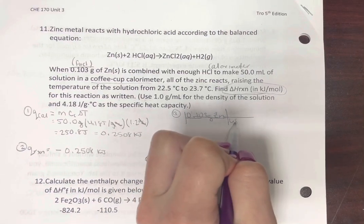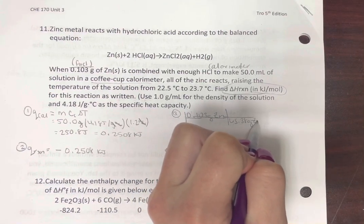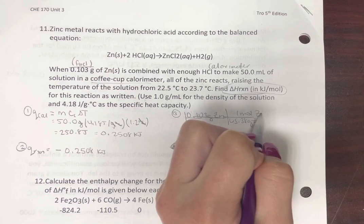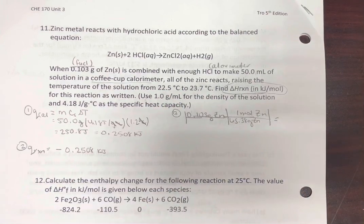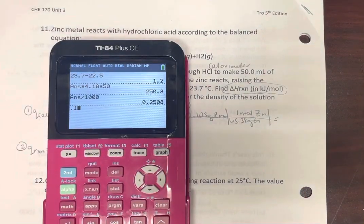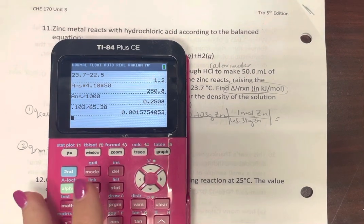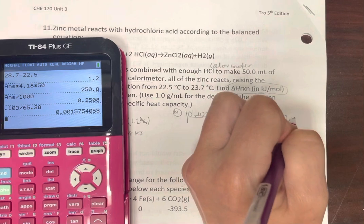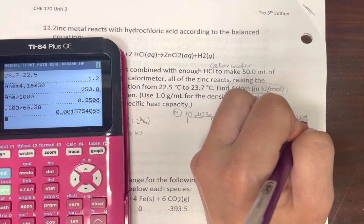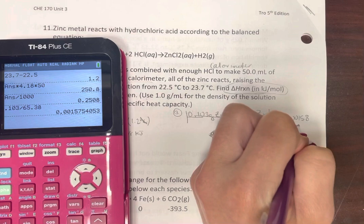Okay, 65.38 grams of zinc is one mole of zinc. So 0.00158 moles. Okay, this time says we're going to call it delta H.